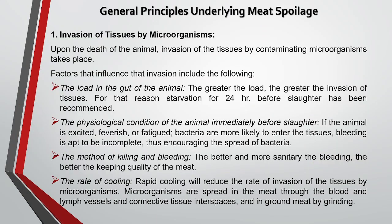The general principles underlying meat spoilage begin with the invasion of tissue by microorganisms. Upon the death of the animal, contaminating microorganisms invade the tissue. The load of microbes in the gut of the animal influences this invasion — the greater the load, the greater the invasion. That is why before 24 hours of slaughter, the animal is kept starved, so the microbial load is less and contamination chances are reduced.